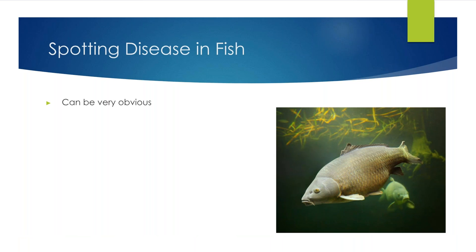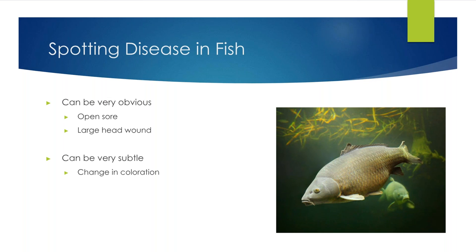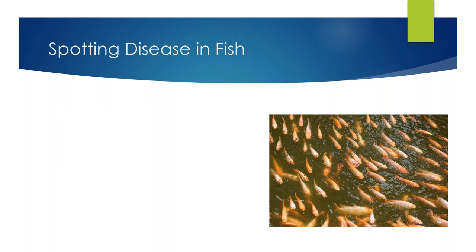Spotting disease in fish can be a very easy and obvious thing when you're dealing with a very large open sore or a large head wound. Sometimes it can be very challenging — the differences are so subtle it takes a professional to notice them, such as a change in coloration or even just a slight decrease in appetite. Physical signs of disease include a change in color, wounds and injuries at different locations on the body, and what percent of the body is affected.